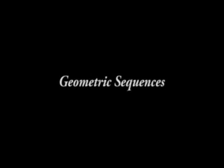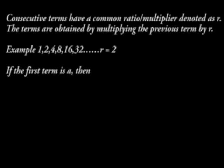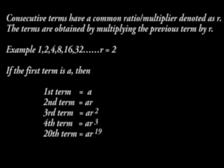Geometric sequences. Here the consecutive terms have a common ratio or multiplier denoted as R. The terms are obtained by multiplying the previous term by R. For example, 1, 2, 4, 8, 16, 32, R is equal to 2. If the first term is A, second term, A R, third term, A R squared, and so forth.